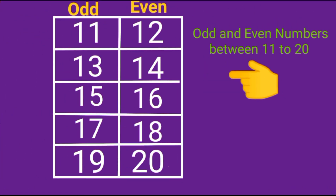Now tell me children, is 20 an odd or even number? What is the ending digit in 20? It is 0, and 0 is an even number, so 20 is also an even number. Look at this table children — what are the odd and even numbers between 11 and 20? The odd numbers are 11, 13, 15, 17 and 19. The even numbers are 12, 14, 16, 18 and 20.